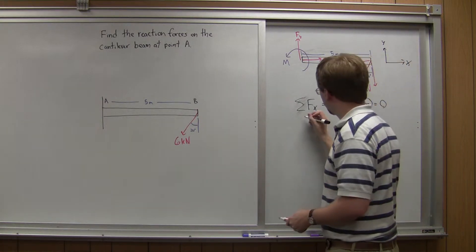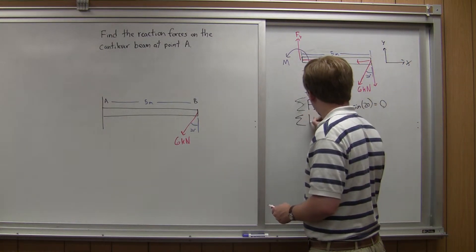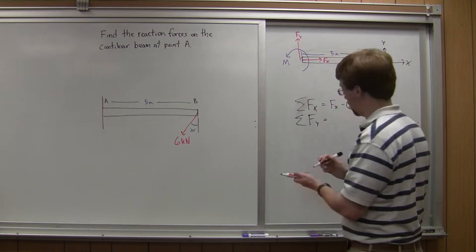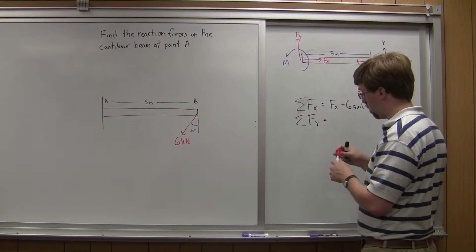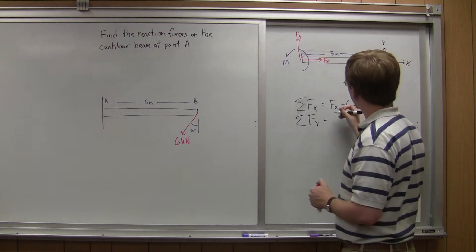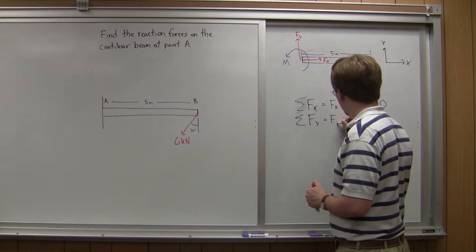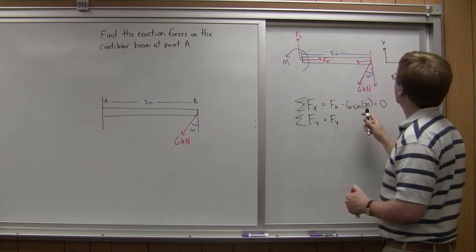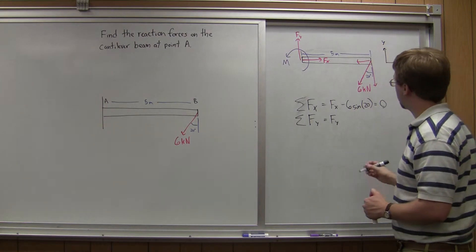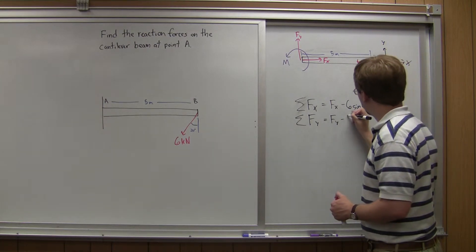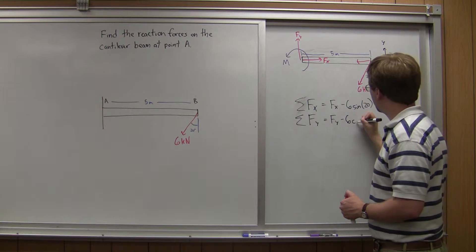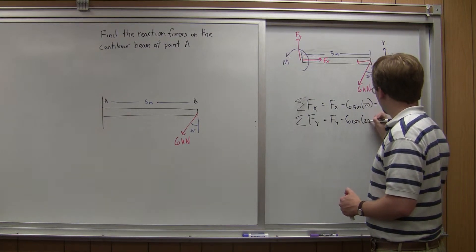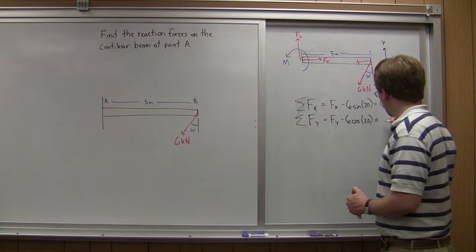Next, I'll go on to sum of forces in the y. For sum of forces in the y, I've got my reaction force Fy, and I've got a negative component of this vector here, so minus 6 times the cosine of 20. That will be equal to zero.